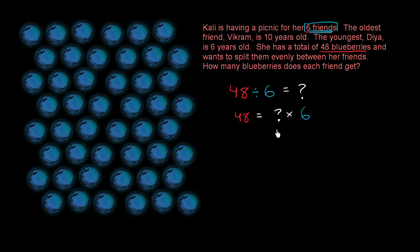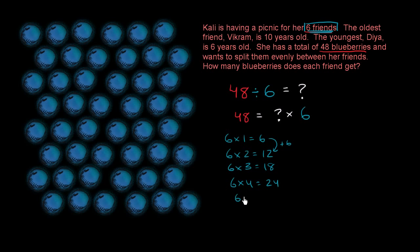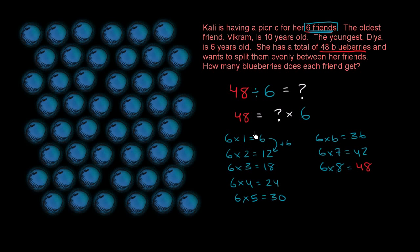So what is this number? Let's think about all of the multiples of six. Six times one is six. Six times two is 12. We're just increasing by six each time. Six times three is 18. Six times four is 24. Six times five is 30. Six times six is 36. Six times seven is 42. Notice we're just adding six every time. Six times eight is equal to 48.